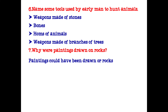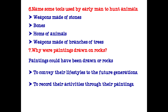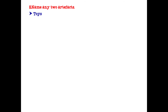Seventh question: why were paintings drawn on rocks? Paintings could have been drawn on rocks to convey their lifestyle to future generations and to record their activities through paintings. Name any two artifacts: toys and ornaments.